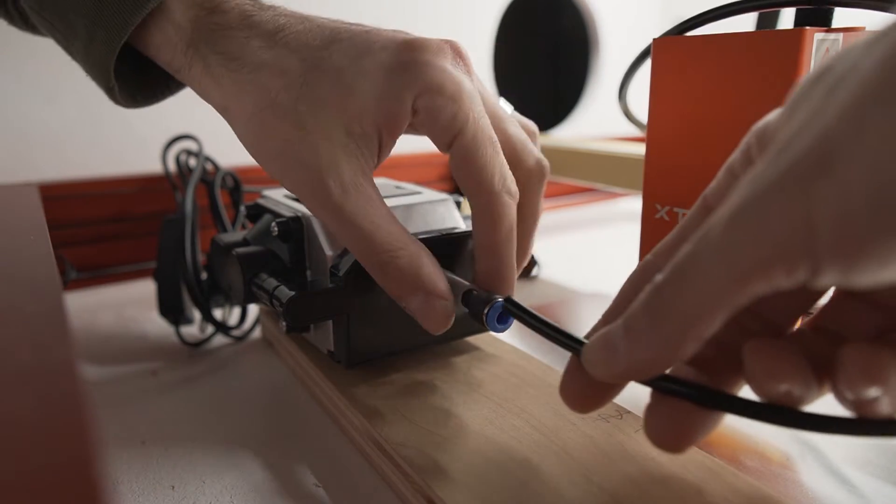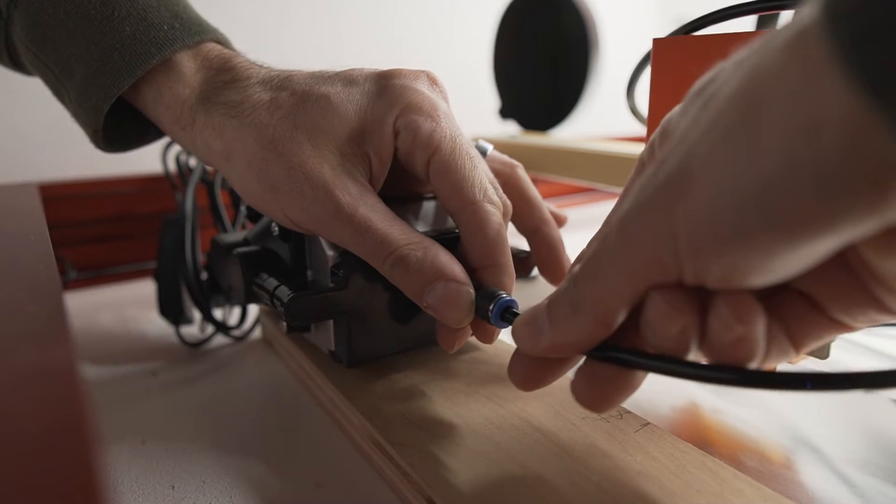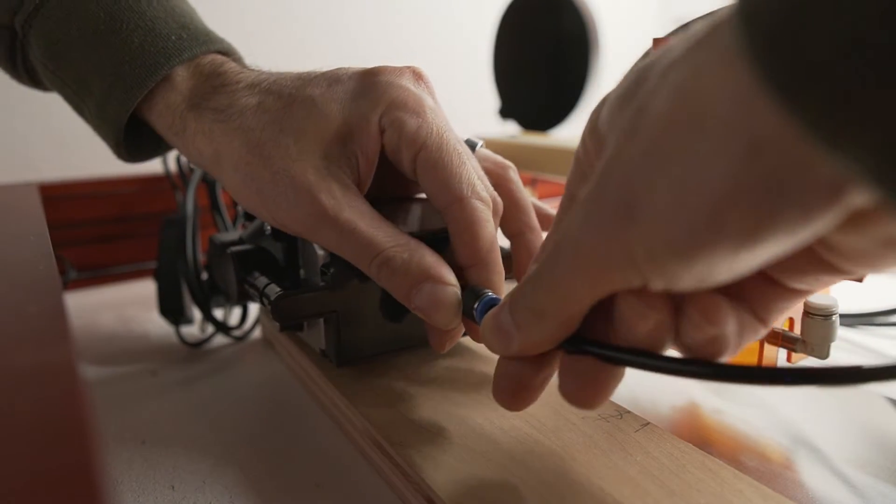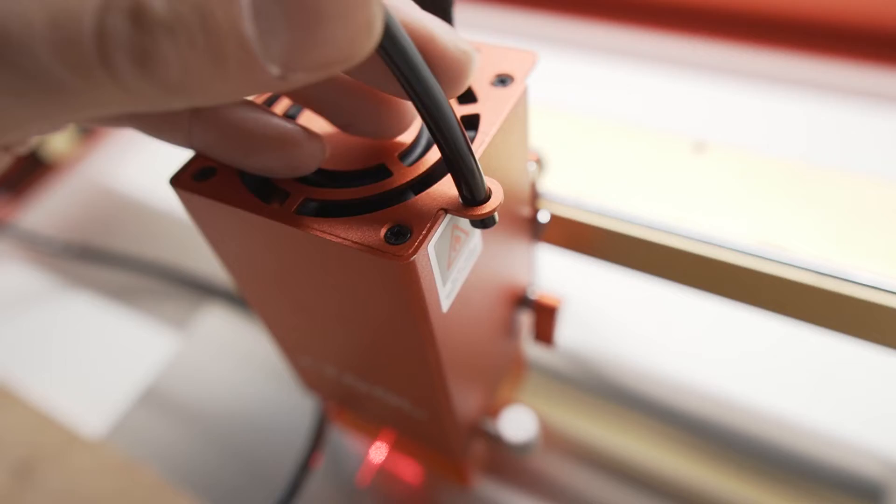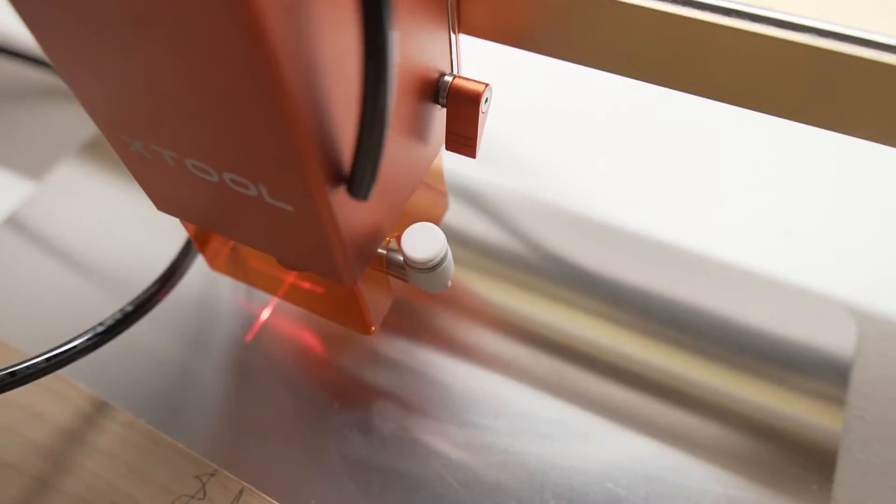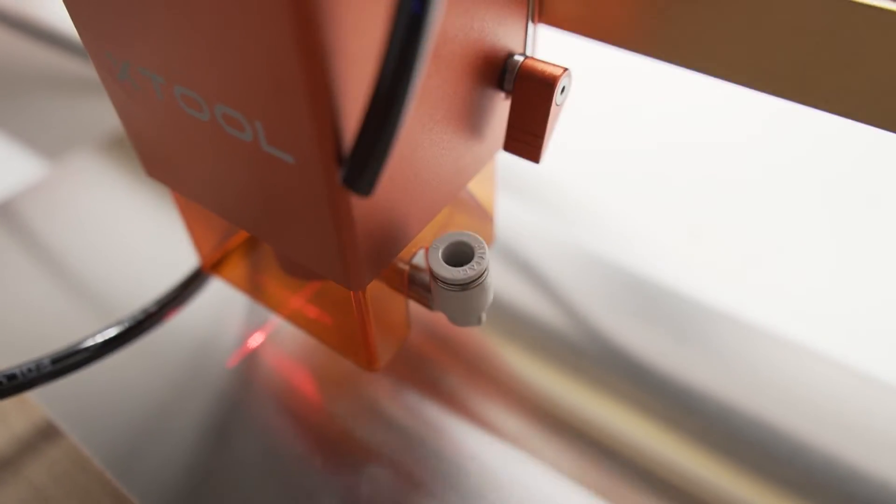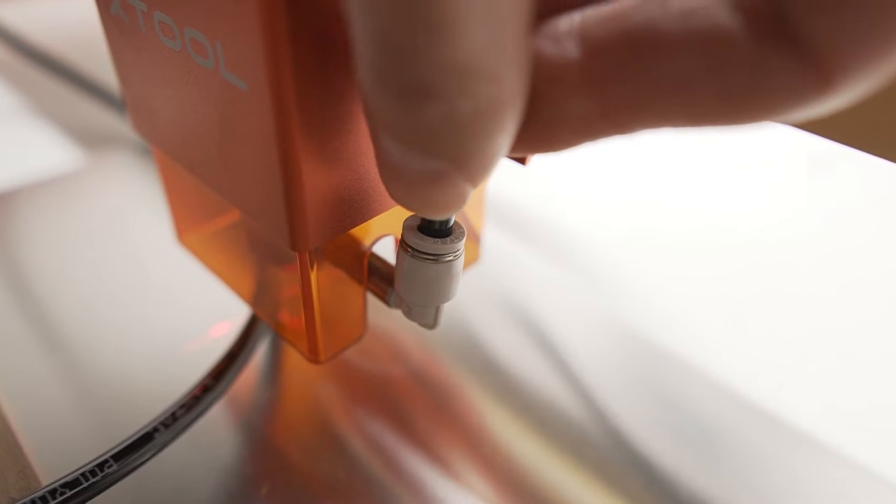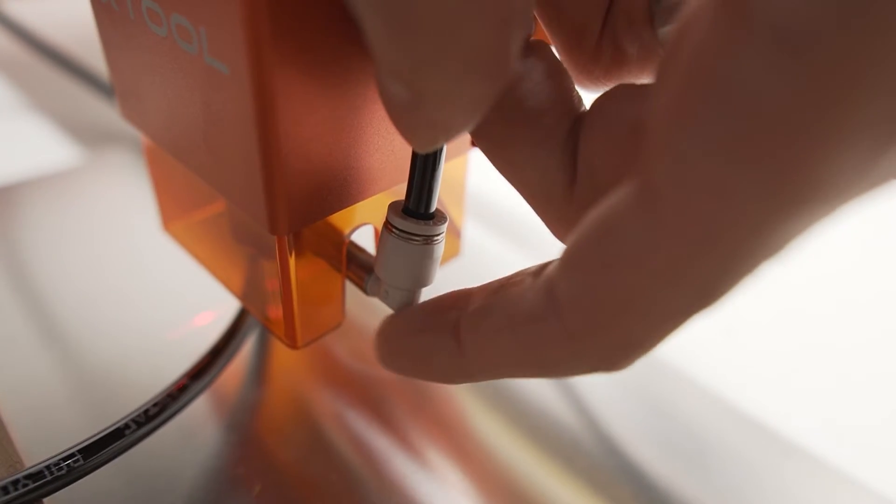So we can take the tubing and this is just a push connector. You just push it in as far as it'll go and then take the other end, put it through this hole up here, remove the silicone cap and push the tubing into the quick connector on the nozzle.